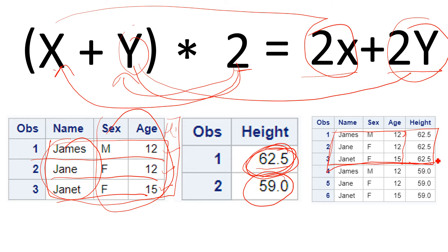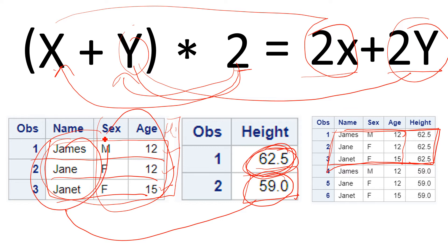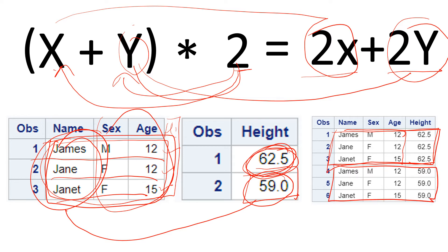Then 59.0 gets joined with all three observations once again and the value is printed. This is how cross join or Cartesian join works.